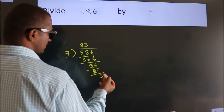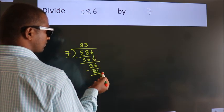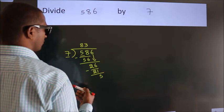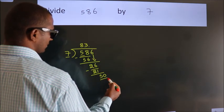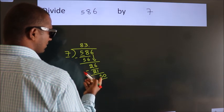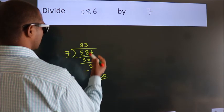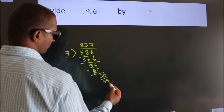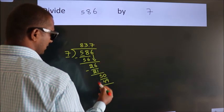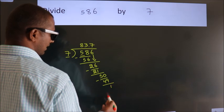After this, no more numbers to bring down. So what we do is put a dot and take 0. So 50. A number close to 50 in the 7 table is 7 times 7, which is 49. Now we subtract. We get 1.